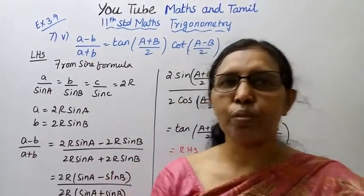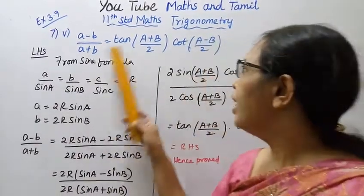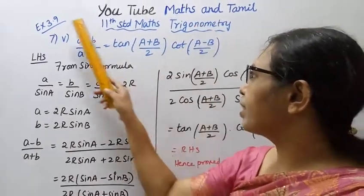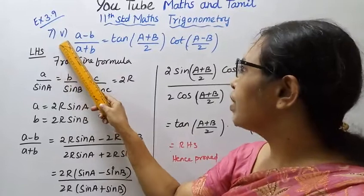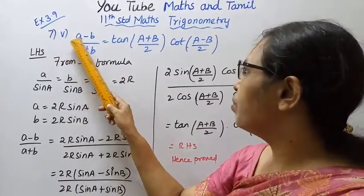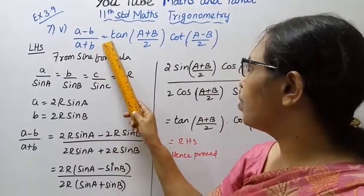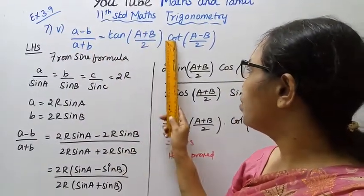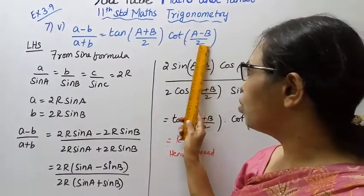Hello students, welcome to Max and Tamil channel. 11th standard maths, trigonometry exercise 3.9, 7th problem, 5th subdivision: prove that (a minus b) by (a plus b) equals tan((a plus b)/2) into cot((a minus b)/2).